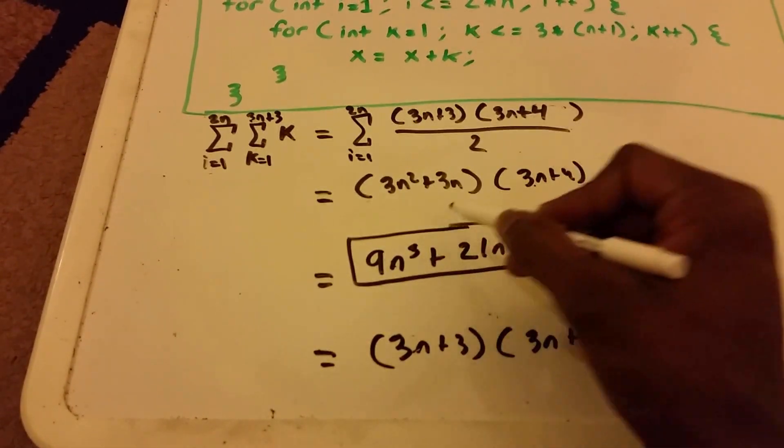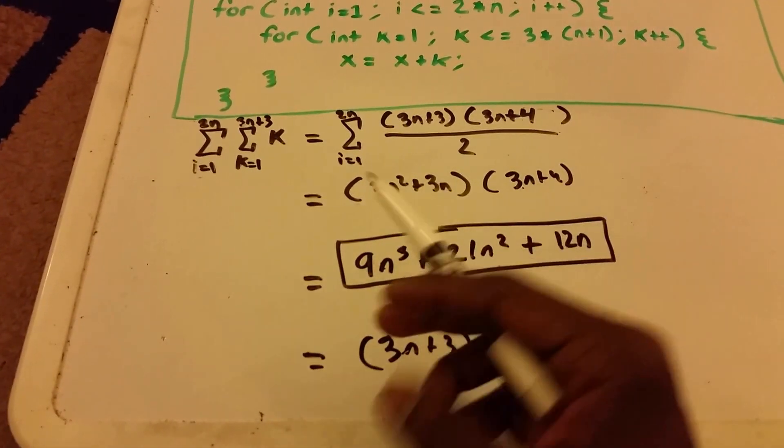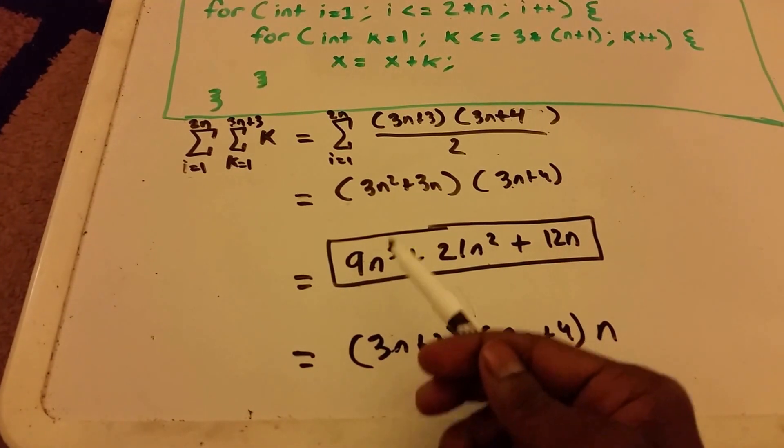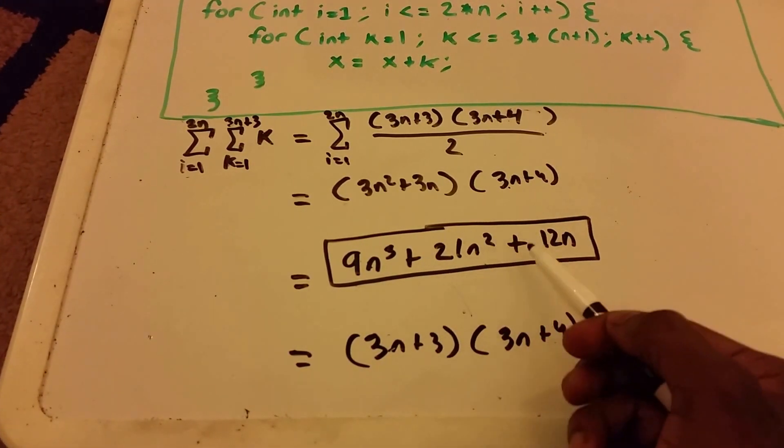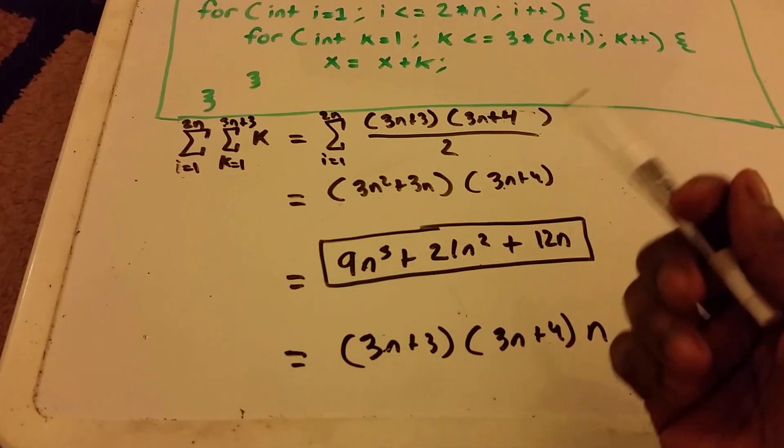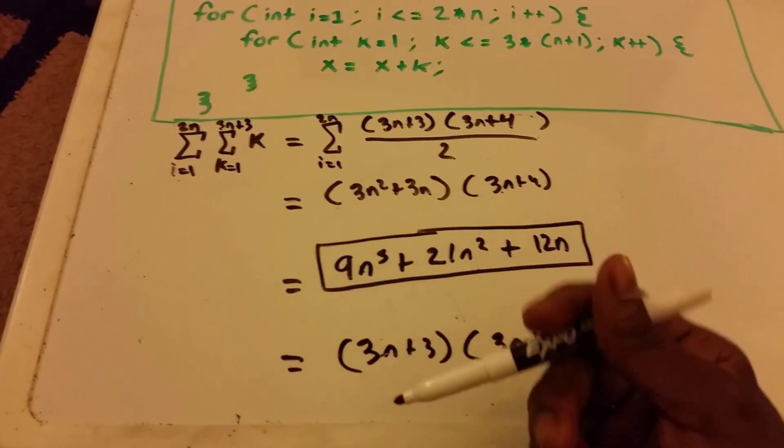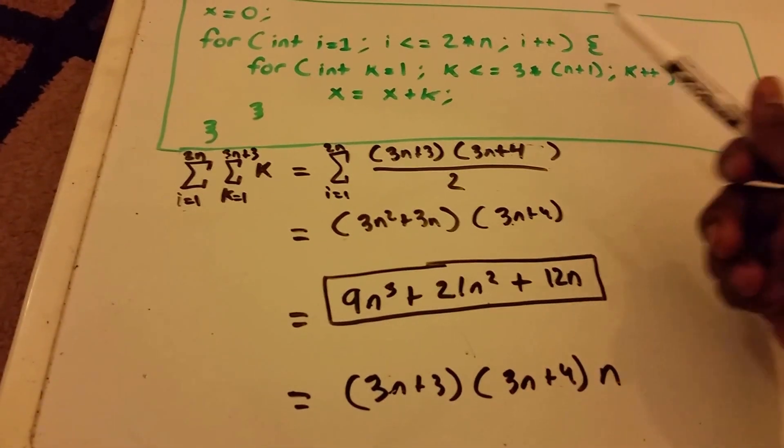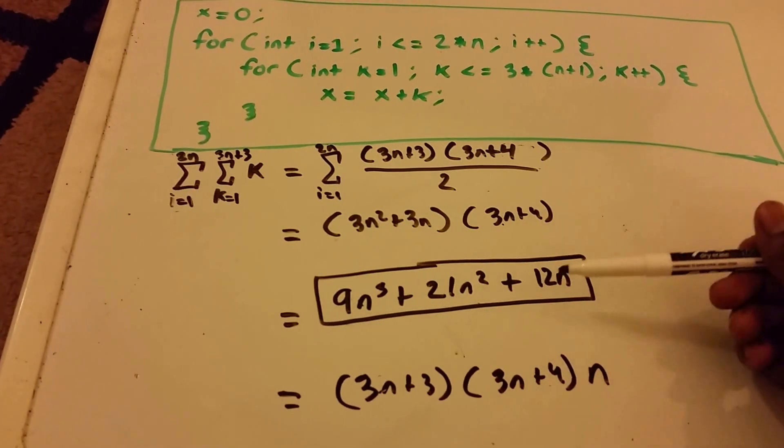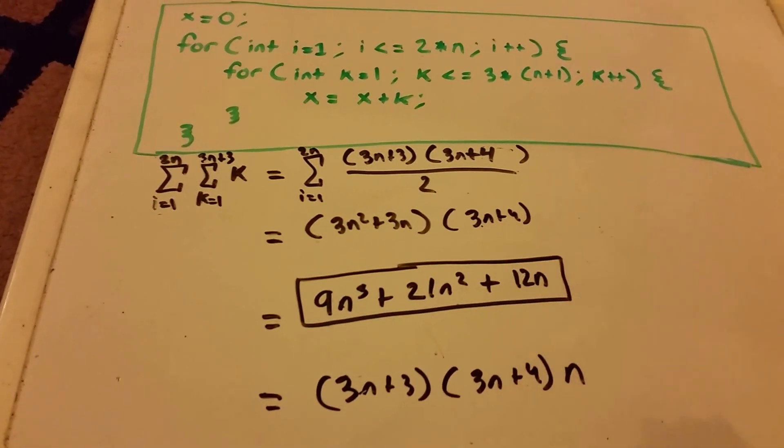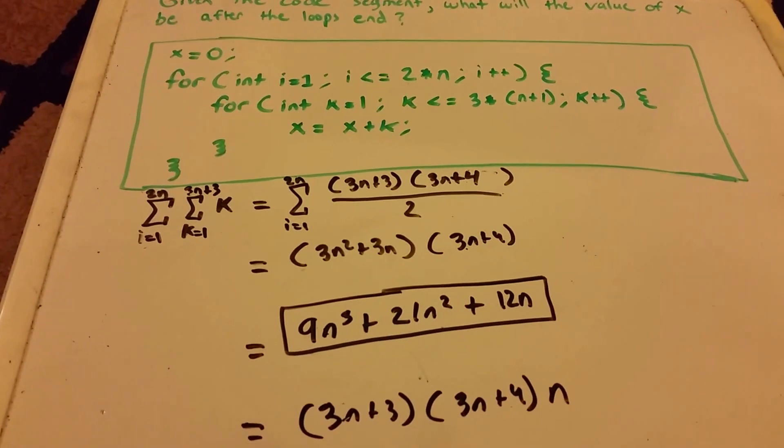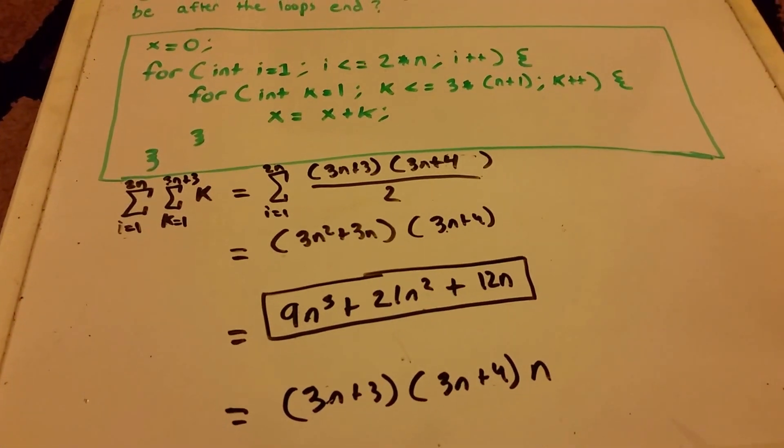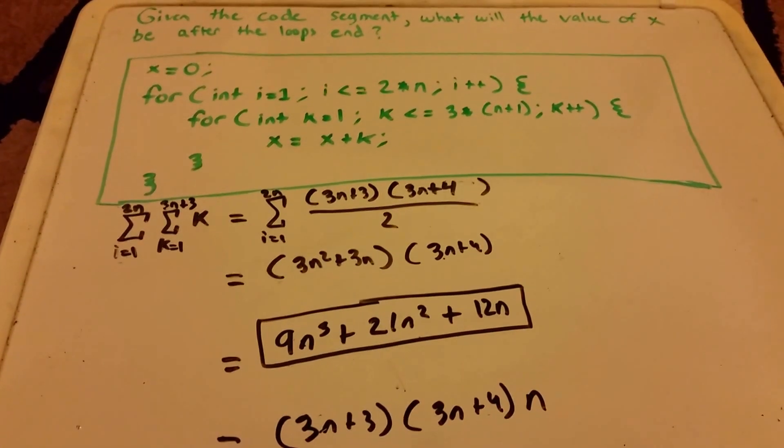So our value x will be nine n cubed plus twenty one n squared plus twelve n. So depending on our input size, that's what the value of x will be. And what you can do is you can actually code this up and you can see if it equals the same equation here, and it should. So thank you guys, I hope that that was useful and helpful, and I'll see you guys on the next video.